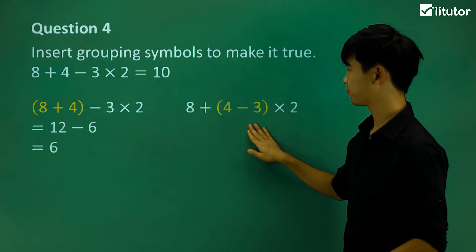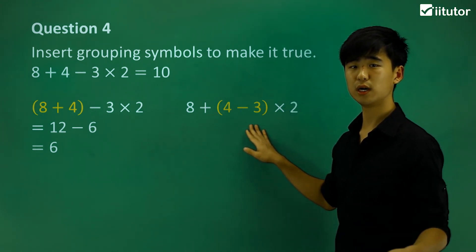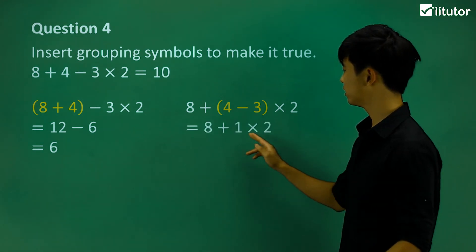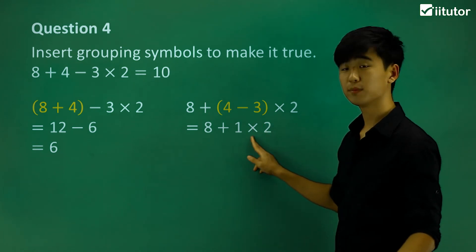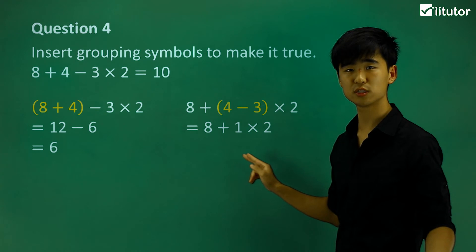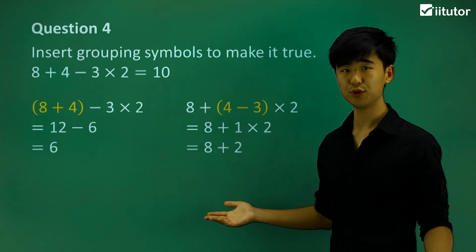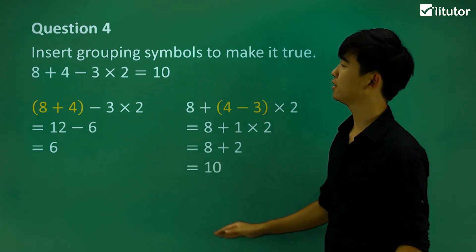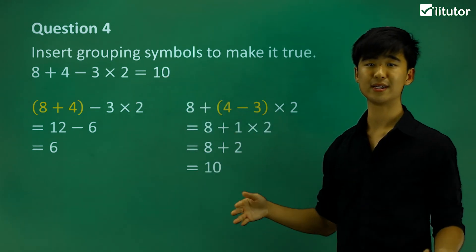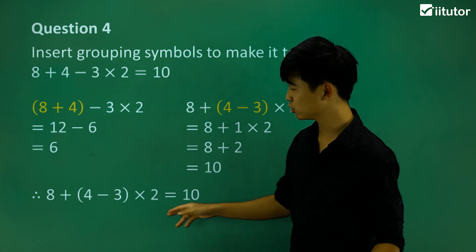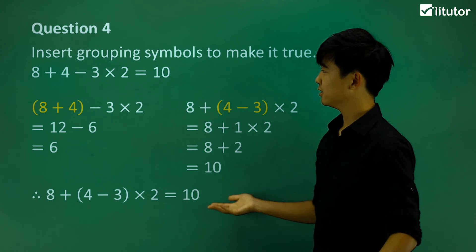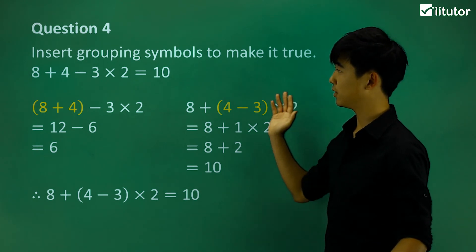Now let's take a look at this one. Inside the grouping symbols, 4 minus 3 is obviously 1. Now, remembering our order of operations, we do multiplication first, so we're left with 8 plus 2, which is 10 — which is the one we want. So we make this true by adding grouping symbols outside of 4 minus 3. That's how we make this equation true.